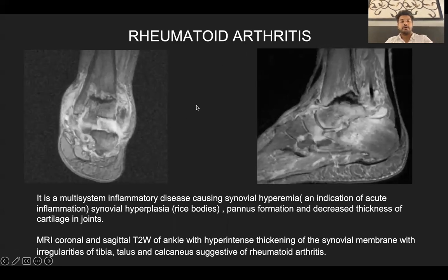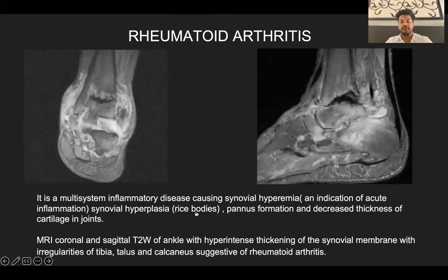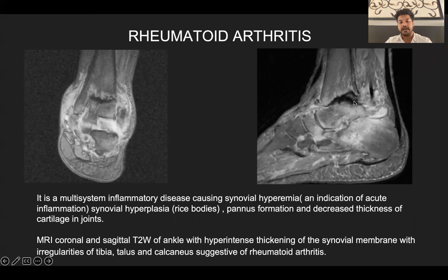Coming to rheumatoid arthritis, it is a multisystem inflammatory disease causing synovial hyperemia, which is an indication of acute inflammation. Synovial hyperplasia presents with rice bodies and pannus formation, along with decreased thickness of the cartilage and joints. MRI coronal and sagittal T2-weighted images of the ankle show hyperintense thickening of the synovial membrane with irregularities of the tibia, talus, and calcaneus, along with synovial thickening and hyperplasia evident in these images.